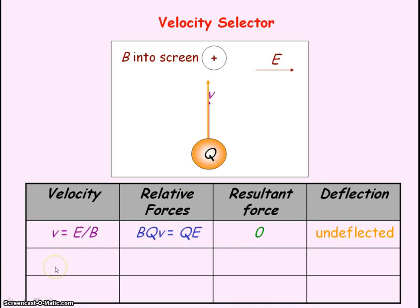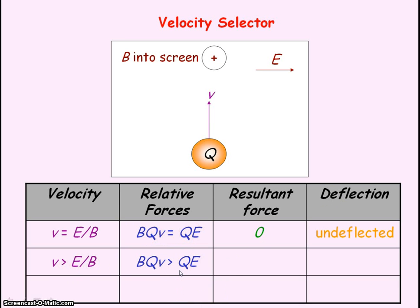In the case when the velocity of the charged particle is greater than E divided by B, because of the larger velocity, the magnetic force will be larger, but the electric force will remain the same because it doesn't depend upon the velocity. So we can say the magnetic force is greater than the electric force, and the resultant force will be the magnetic force minus the electric force. So there'll be a net deflection to the left due to the larger magnetic force.